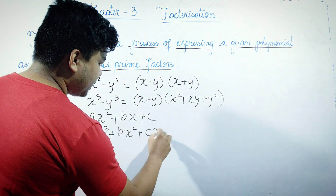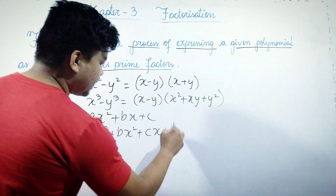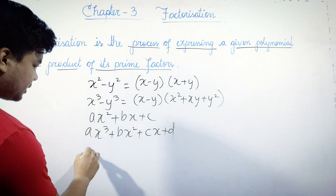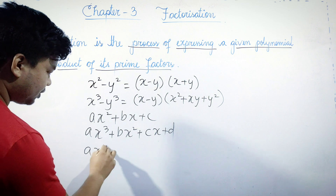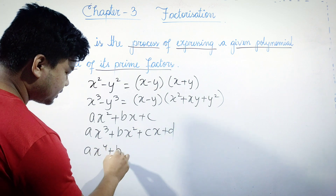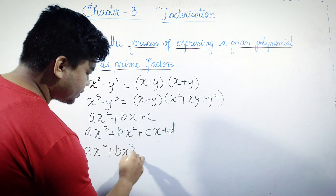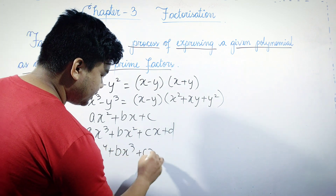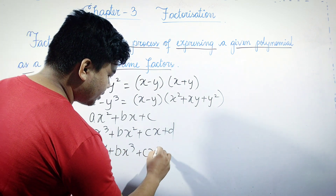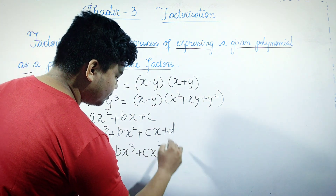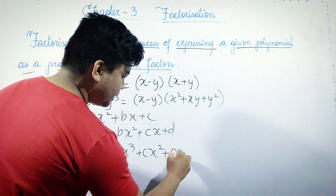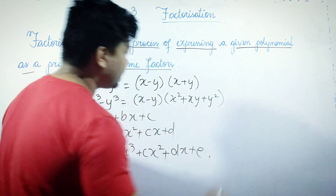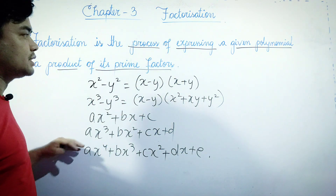It's a product of its prime factors. Ax to the power of 4 plus Bx cubed plus Cx to the power of 2 plus Dx plus E. This is a polynomial.